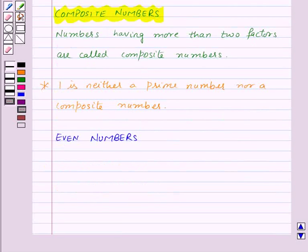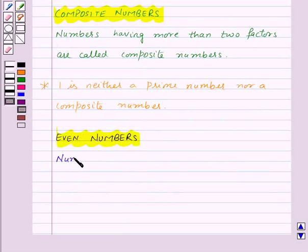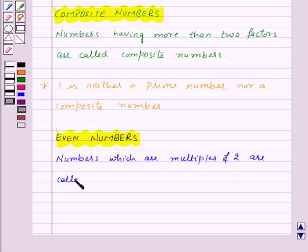Now let us see what are even numbers. Numbers which are multiples of 2 are called even numbers.